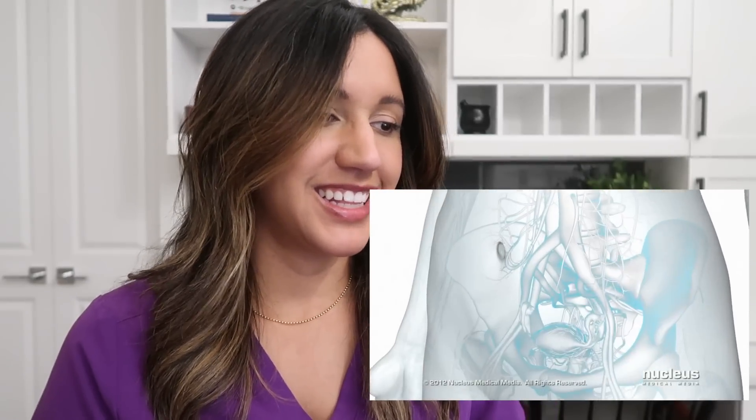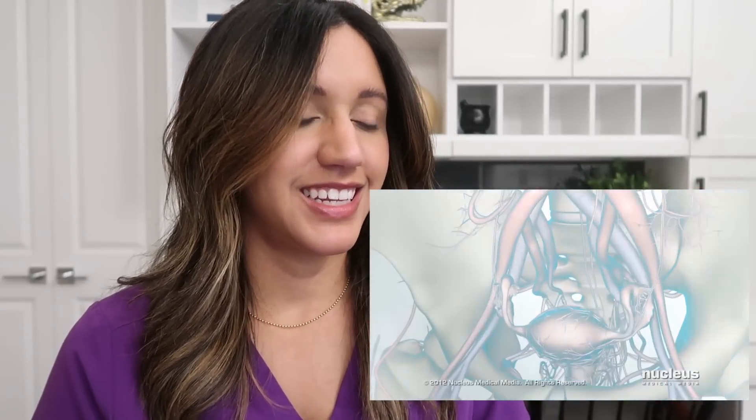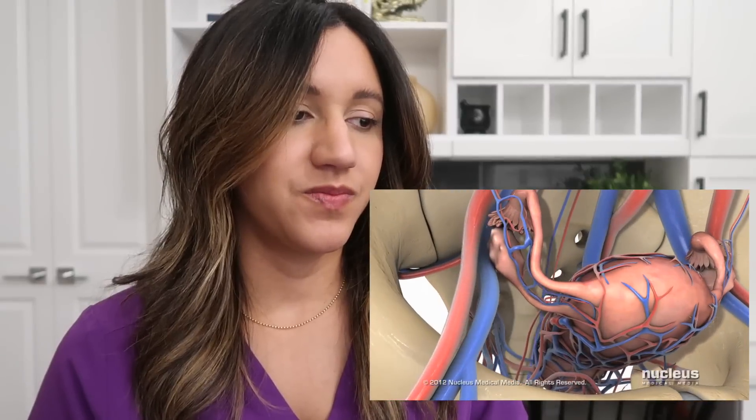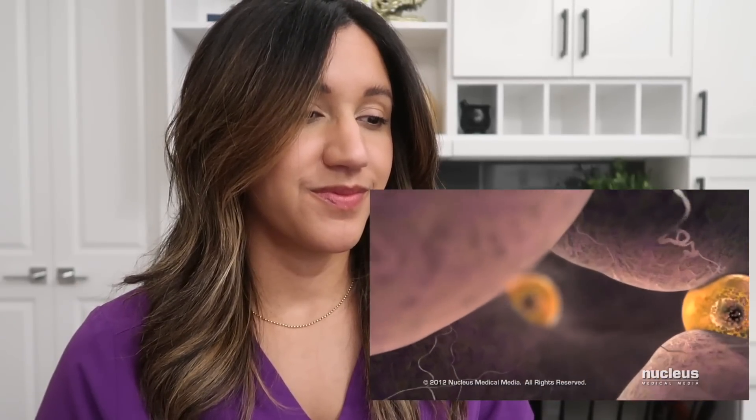Ovulation is a part of the menstrual cycle when the ovary releases a ripe egg or ovum. Inside the ovary are hundreds of thousands of follicles. Each follicle is a hollow ball of cells with an immature egg in the center.